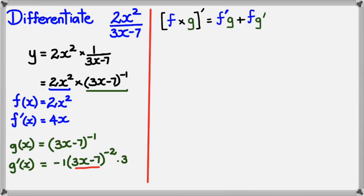Now I'm going to substitute these four elements into the product rule formula. Let me simplify g-dash first: that gives me negative 3 times 3x minus 7 to the power of negative 2.